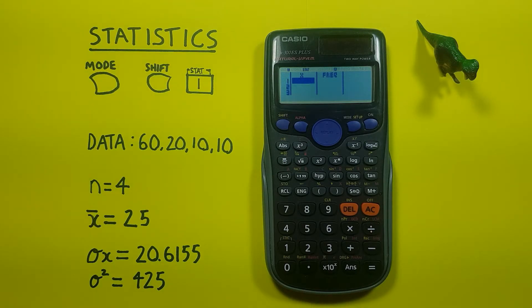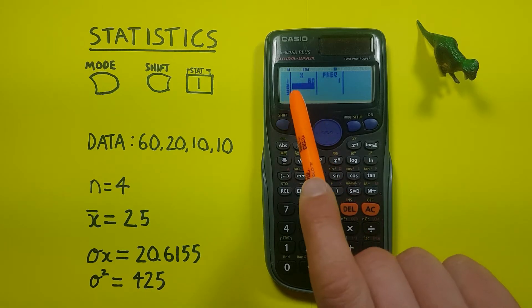There we go, and that brings us to this table here where we can enter our data set. For our example, this will be our data set here: 60, 20, 10, 10. We can go ahead and enter the 60 first and hit equals.